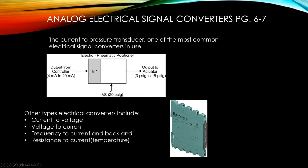Other types of electrical converters are usually done via a card in the rack and include current-to-voltage, voltage-to-current, frequency-to-current, and resistance-to-current conversions. One of the more common ones you'll see is a thermocouple card — the thermocouple lands on the card, changing resistance, and we want milliamps to come out, so an electrical converter handles that conversion.